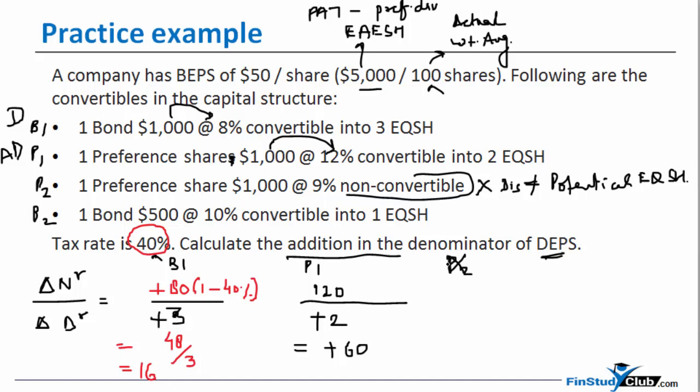Let's talk about P2. Should I talk about P2? Answer is a big no, because P2 is anyways non-convertible. Therefore it is not a potential security, hence there is no question of it becoming dilutive or anti-dilutive. Let's talk about Bond 2.